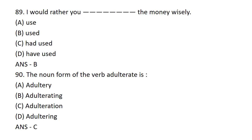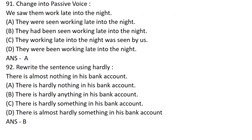The noun form of the verb 'adulterate' is: Option A: ADULTERY. Option B: ADULTERATING. Option C: ADULTERATION. Option D: ADULTERING. The answer is Option C — ADULTERATION.